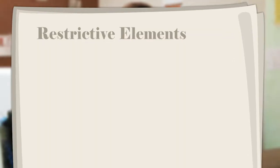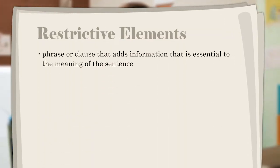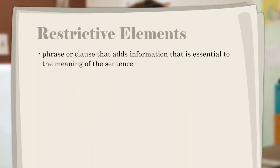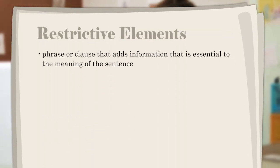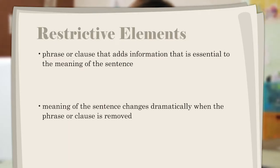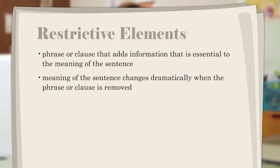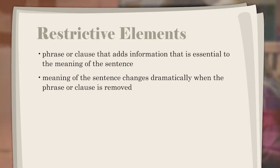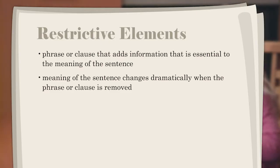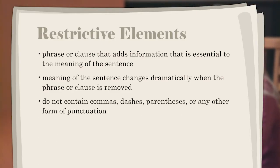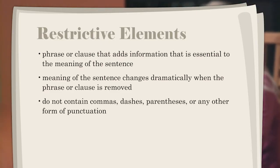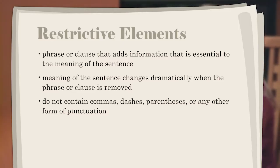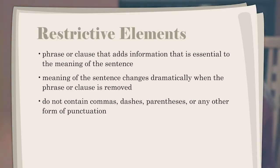A restrictive element is a phrase or clause that adds information that is essential to the meaning of the sentence. The meaning of the sentence changes dramatically when the phrase or clause is removed. Restrictive elements do not contain commas, dashes, parentheses, or any other form of punctuation to separate the information from the rest of the sentence.